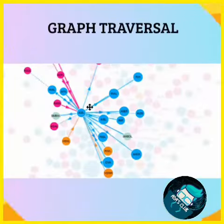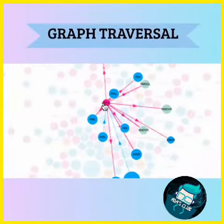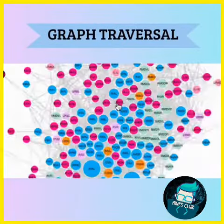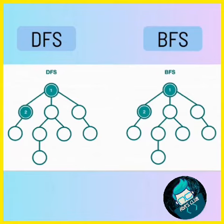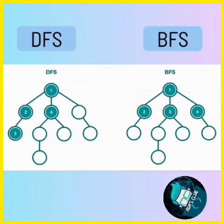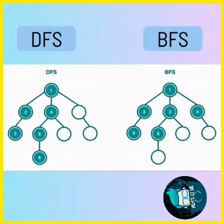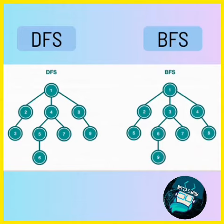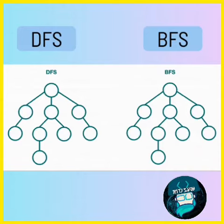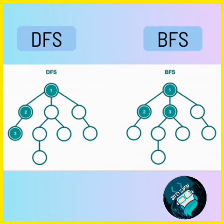Traversal techniques help us explore graphs efficiently. Breadth-first search, or BFS, explores a graph level by level, visiting neighboring nodes first. Depth-first search, or DFS, explores as far as possible before backtracking.